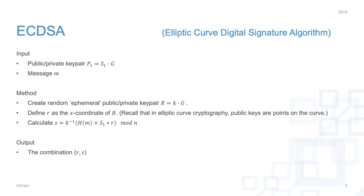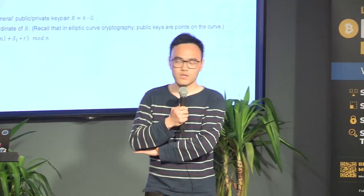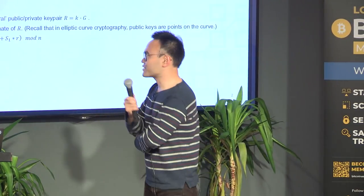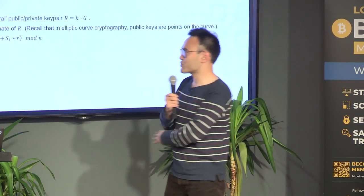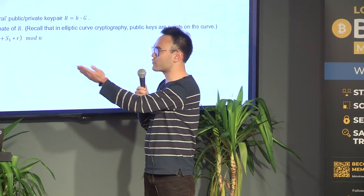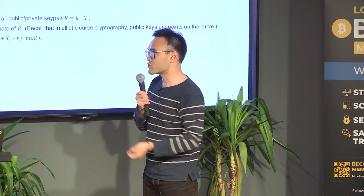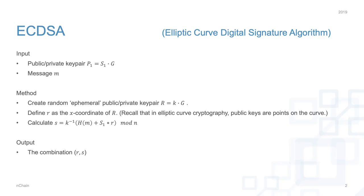This is normal ECDSA signing — nothing special. There are many variations; here I said hash of M, but sometimes you can truncate hash of M to get the exact required length. That is the basic signing algorithm and the technical background of ECDSA signature.